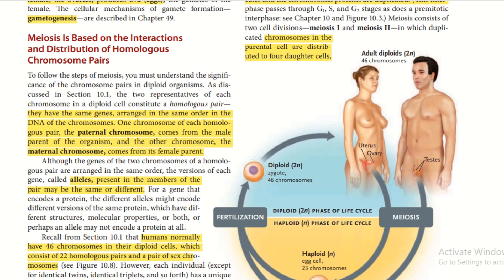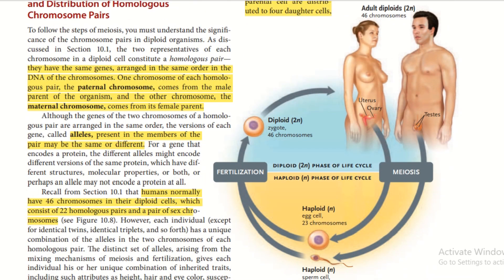Meiosis is based on the interaction and distribution of homologous pairs of chromosomes. Homologous pairs have the same genes arranged in the same order in the DNA of the chromosome. One chromosome of each homologous pair — the paternal chromosome — comes from the male parent of the organism, and the other — the maternal chromosome — comes from the female parent.